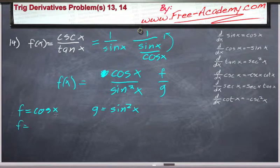f prime is the derivative of cosine of x, which is negative sine of x. g prime is equal to sine squared of x, derivative of that, which...